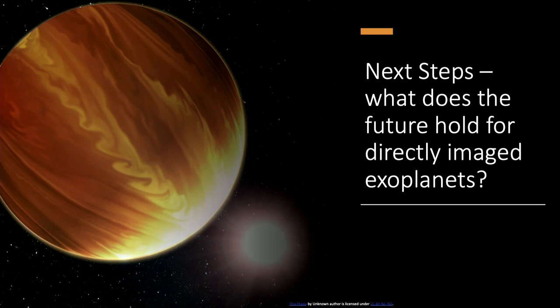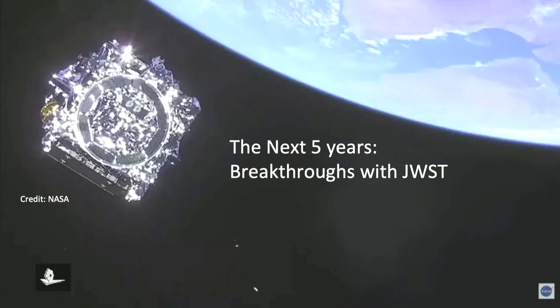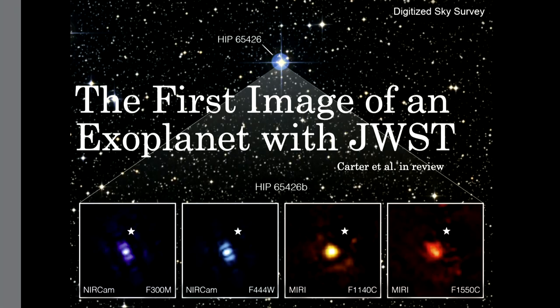I want to conclude with the future. What is the next Protostars and Planets 8 review on this going to look like? We're now firmly in the era of JWST — I'm expecting a lot of very interesting results. Here is the very first image of an exoplanet with JWST — one of these red dusty L-dwarf planets. JWST especially lets us get to longer wavelengths: images at 11.4 microns and 15.5 microns are the first images of an exoplanet ever at wavelengths greater than 10 microns. This lets us constrain the spectral energy distributions and bolometric luminosity, which leads to better mass estimates.